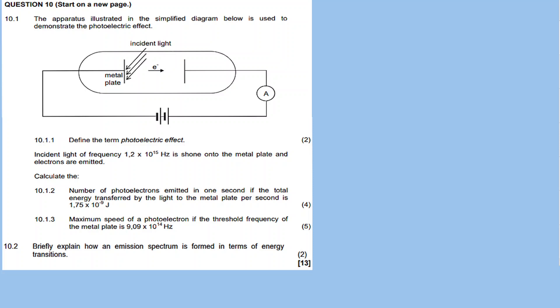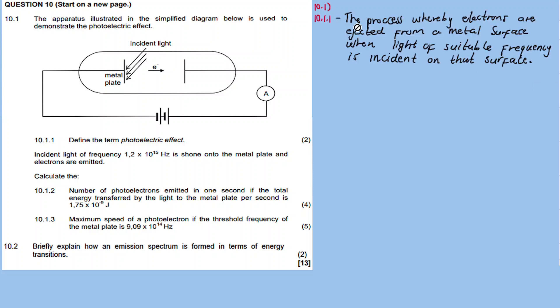So that is the photoelectric effect explained using an analogy. For question 10.1.1, we need to define the term photoelectric effect. The definition is: the process whereby electrons are ejected from a metal surface when light of suitable frequency is incident on that surface. This is the proper definition for the photoelectric effect.